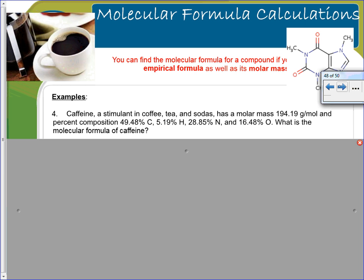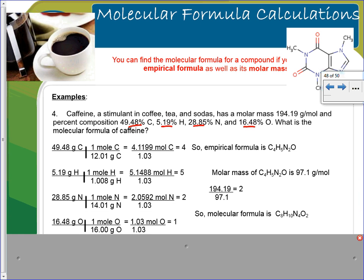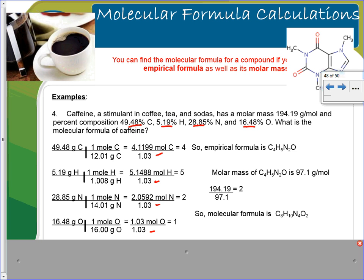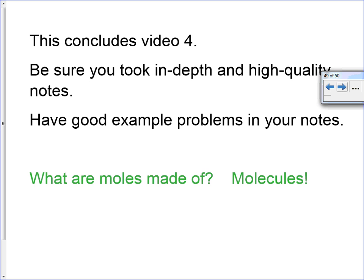This last one is similar — pause the video and work it. Convert all percentages to moles, divide by the smallest to get subscripts, and find the empirical formula. Calculate its molar mass, then divide the given molar mass by the empirical molar mass to get 2. Multiply all subscripts by 2 to get C8H10N4O2. That concludes video 4 and the last video for this unit. Make sure you have in-depth, high-quality notes and good example problems.